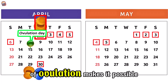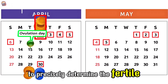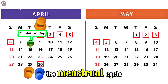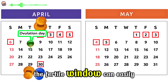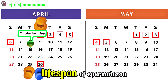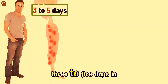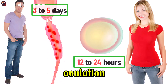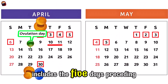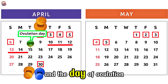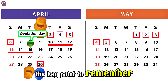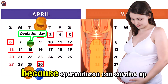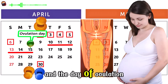Accurately calculating the date of ovulation makes it possible to precisely determine the fertile period — this is when a woman can become pregnant. The fertile window is determined by the lifespan of spermatozoa in men, 3 to 5 days in the female genital tract, and that of the egg in women, 12 to 24 hours after ovulation. Therefore, the fertile period includes the 5 days preceding ovulation and the day of ovulation. The key point to remember: the fertile window in a woman lasts 6 days per cycle — the 5 days preceding ovulation and the day of ovulation itself.